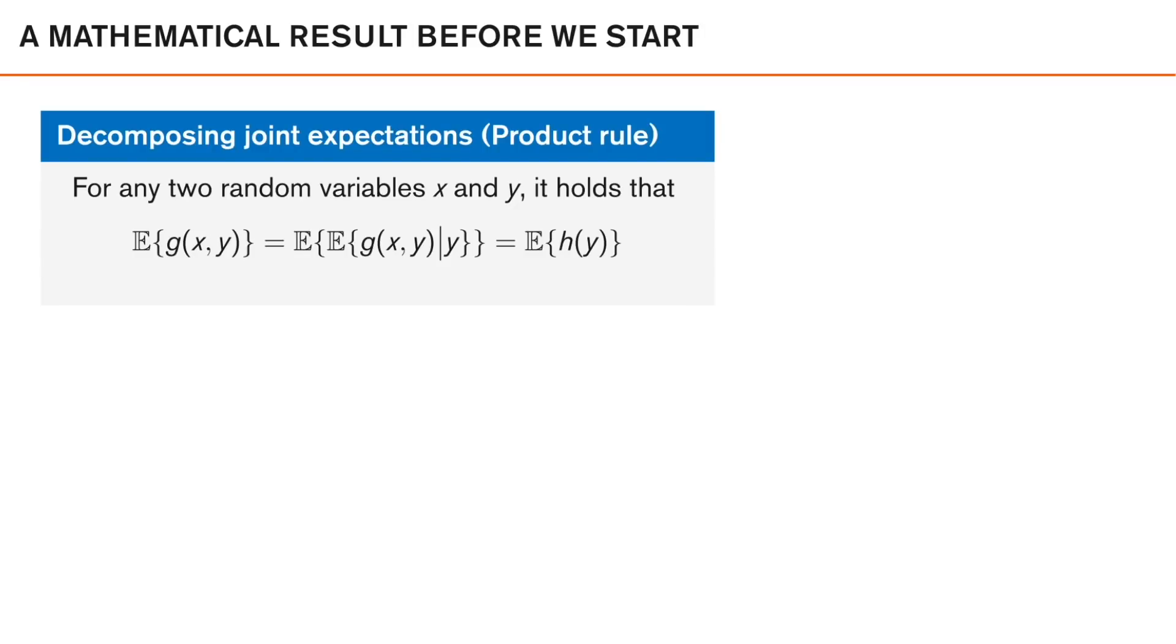Before we start, I would like to go through some mathematical results of how one can decompose joint expectations over multiple variables. And this is something that is related to the product rule of probability densities. If you're not familiar with this, I hope that this will help you understand the results that we present throughout this lecture. So the result goes like this. For any two random variables, x and y, it holds that if you take the expectation over a fairly well-behaving function g of x and y over both of these random variables, we can then decompose this into two expectations. One where we fix y, for example. This means that we condition on y and take the expected value only over x. As we marginalize out x in this expression here, this here will only be a function of y. Let's call it h of y. So we can then write this as taking only the expectation over h of y, which is then this function here.